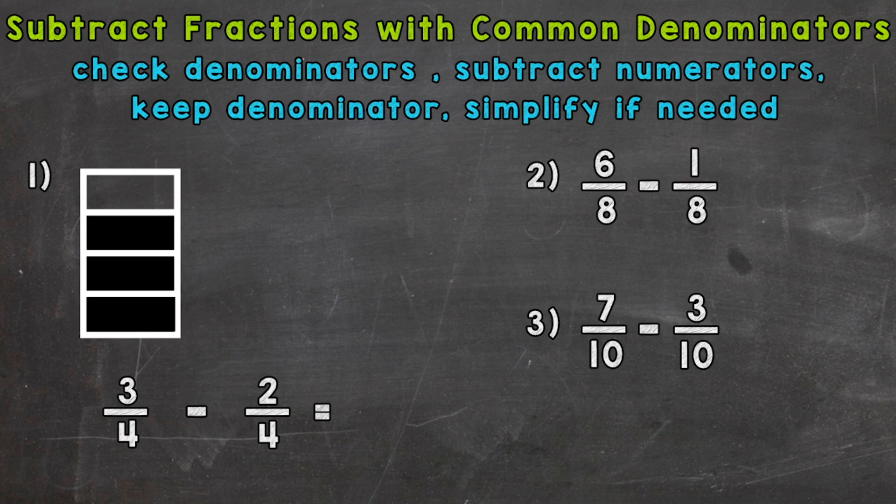We're first going to check our denominators. Then we're going to subtract our numerators, keep our denominator the same, and then simplify if needed. We have three examples that we'll go through together to get this down.